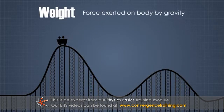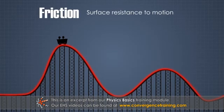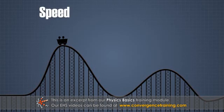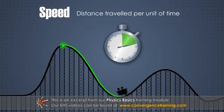Weight is the force exerted on a body by gravity. Friction is the surface resistance to relative motion. Speed is the distance traveled per unit of time.